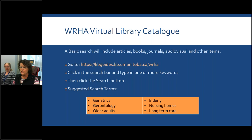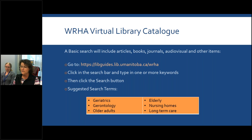The first place to look, a good starting point, is our virtual library catalog. A basic search will include articles, books, journals, audio visuals, and other items. These are things that we have purchased electronically for the WRHA library, but you also have access to the print resources available through the University of Manitoba.